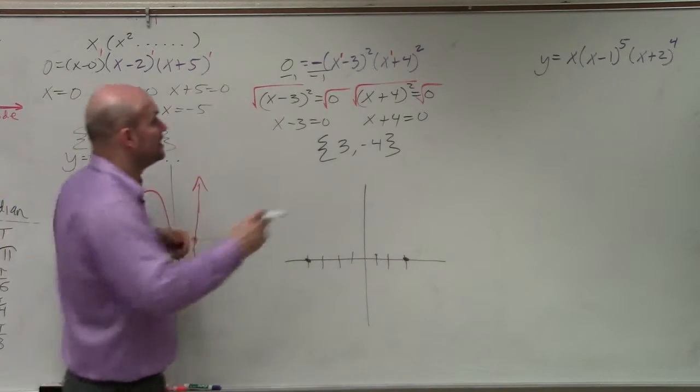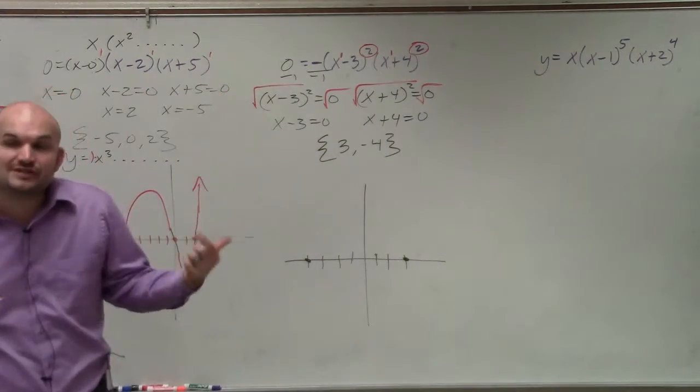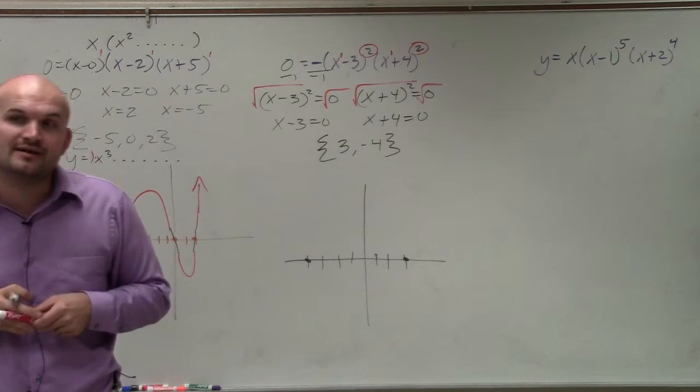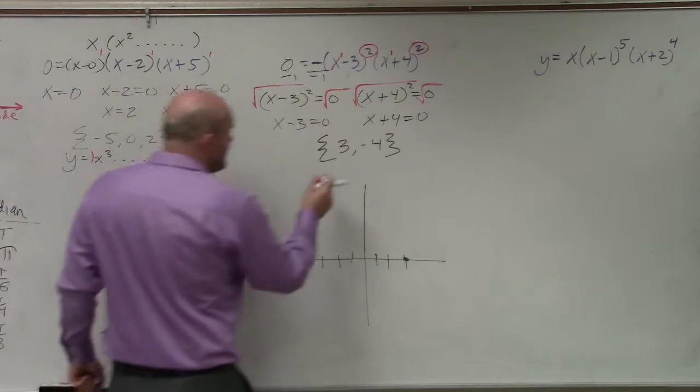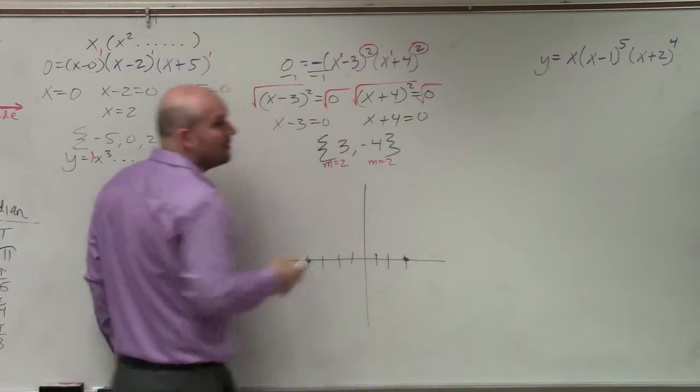When the factors are linear, the multiplicity is the power of the factor. So in each of these cases, I have a multiplicity of 2, which is odd or even. Even. So since the multiplicity is even, that tells me that the graph bounces.